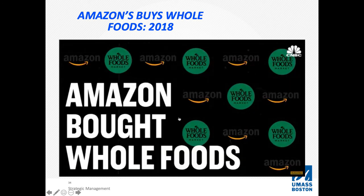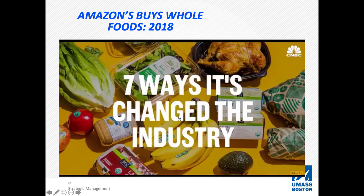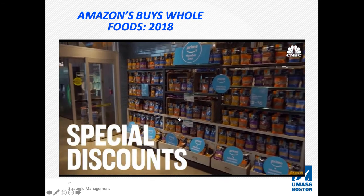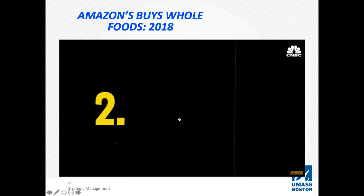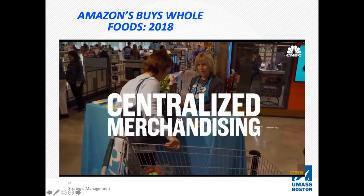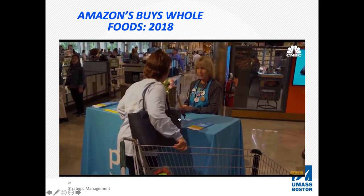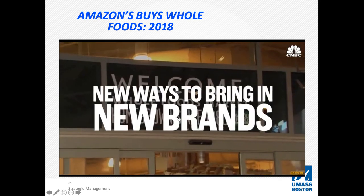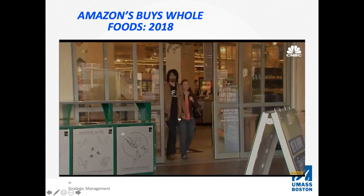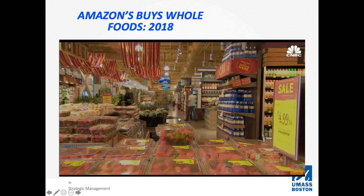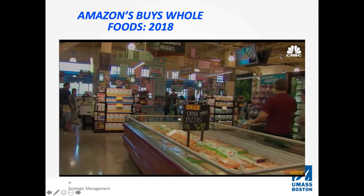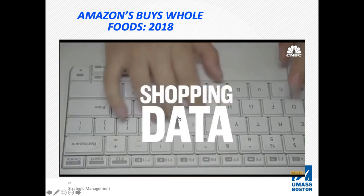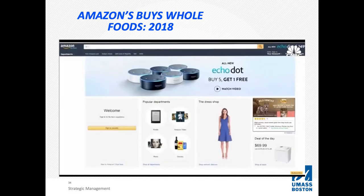It's been a year since Amazon bought Whole Foods. Here are seven ways the deal has been a game changer for the industry. One: Whole Foods stores look different — they now sell Amazon devices like Echo, and in some stores there are signs for special discounts for Amazon Prime members; Whole Foods has also begun to offer free delivery for Prime members. Two: things are also changing behind the scenes — Whole Foods has begun to centralize its merchandising, handling in-store displays rather than outsourcing to third-party services. Three: it's trying to make a regional grocer national, streamlining how it brings in new food brands more efficiently. Four: Amazon has found a treasure trove of data, getting insights into how the same person shops on and offline.